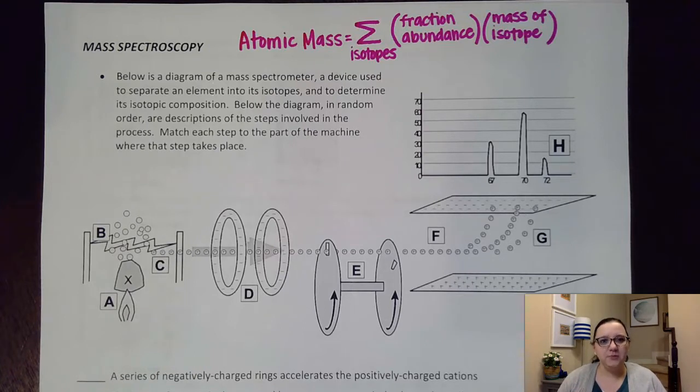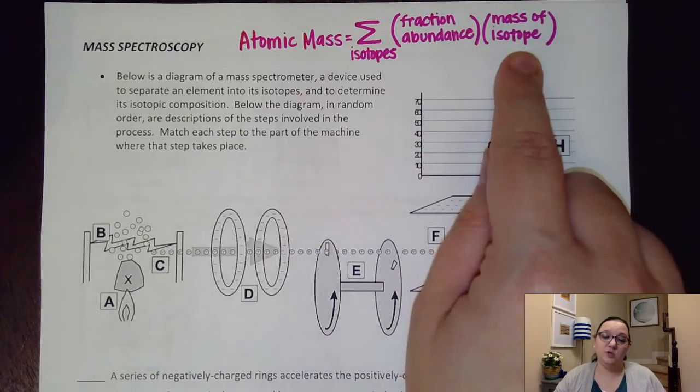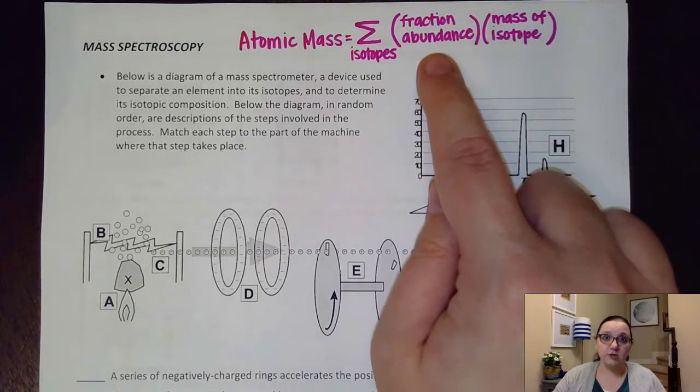Now, I know most of us are familiar with average atomic mass, that basically it is a weighted average of isotope samples of a particular element taken from all over the Earth, and we've analyzed those samples to determine the masses of isotopes that are present, as well as their fraction abundance.